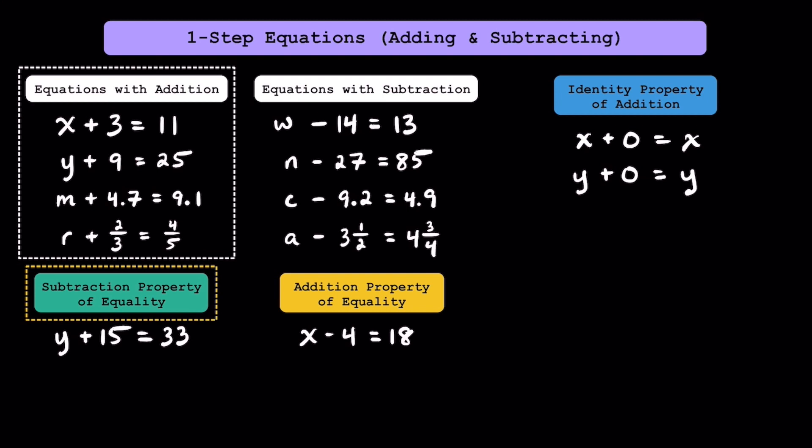Let's look at this equation of y plus 15 is equal to 33. There's only one number in the world that y can be that'll make this equation true. While the right side is 33, the left side also has to equal 33. In order for the left side to equal 33 and match the right side, y has to equal 18, because 18 plus 15 is equal to 33. Using the subtraction property of equality, we can subtract 15 on the left side and 15 on the right side. Whenever you subtract the same value on both sides of the equal sign, you're using the subtraction property of equality.